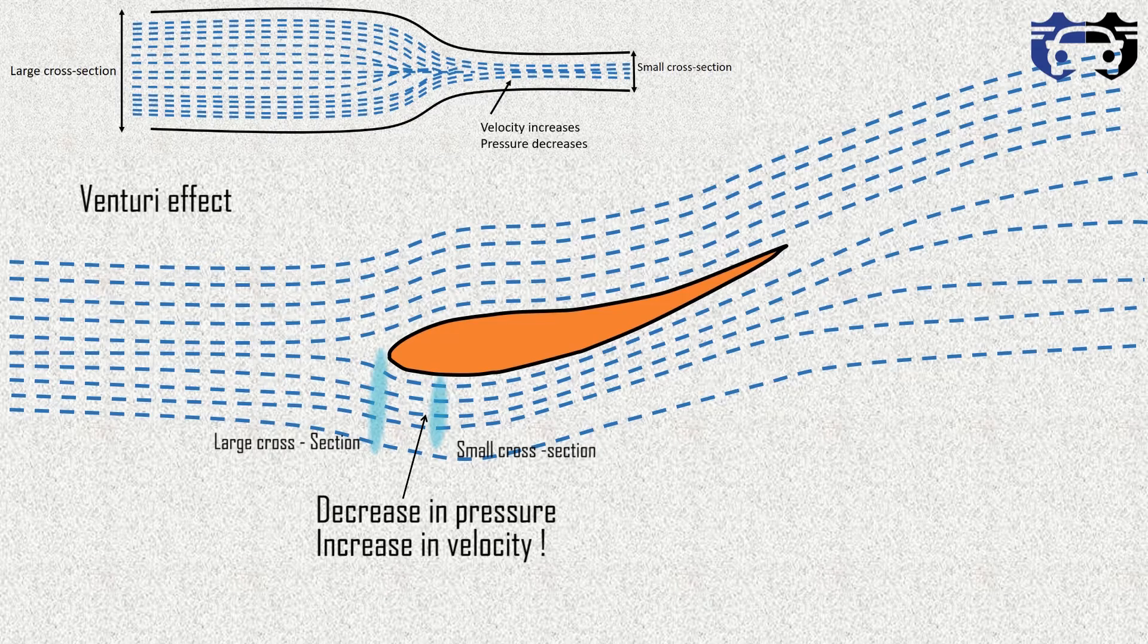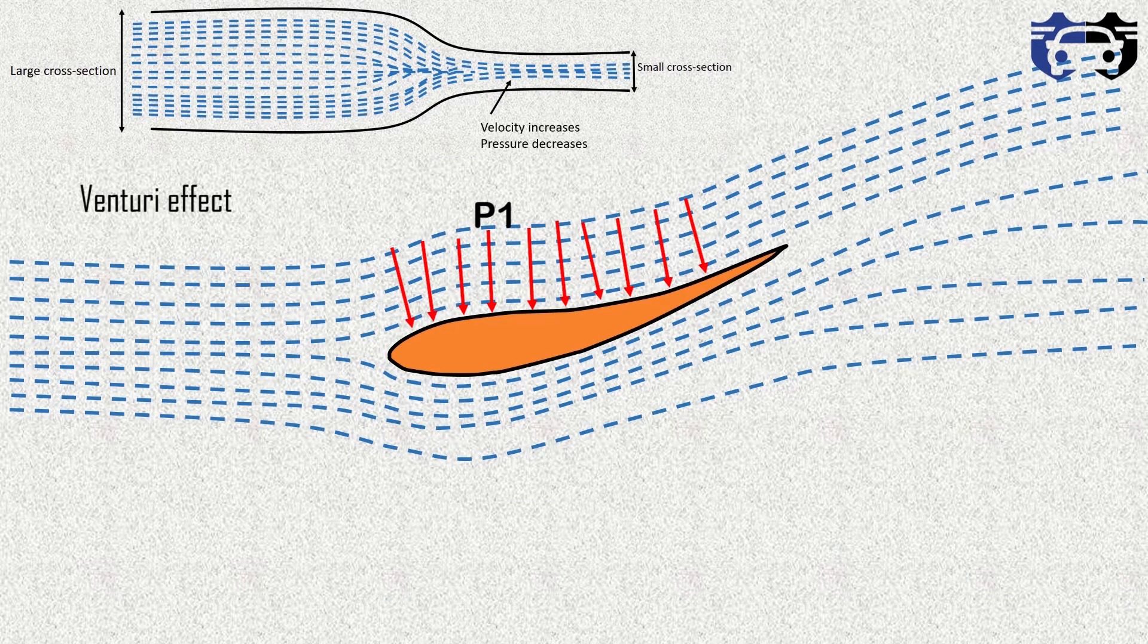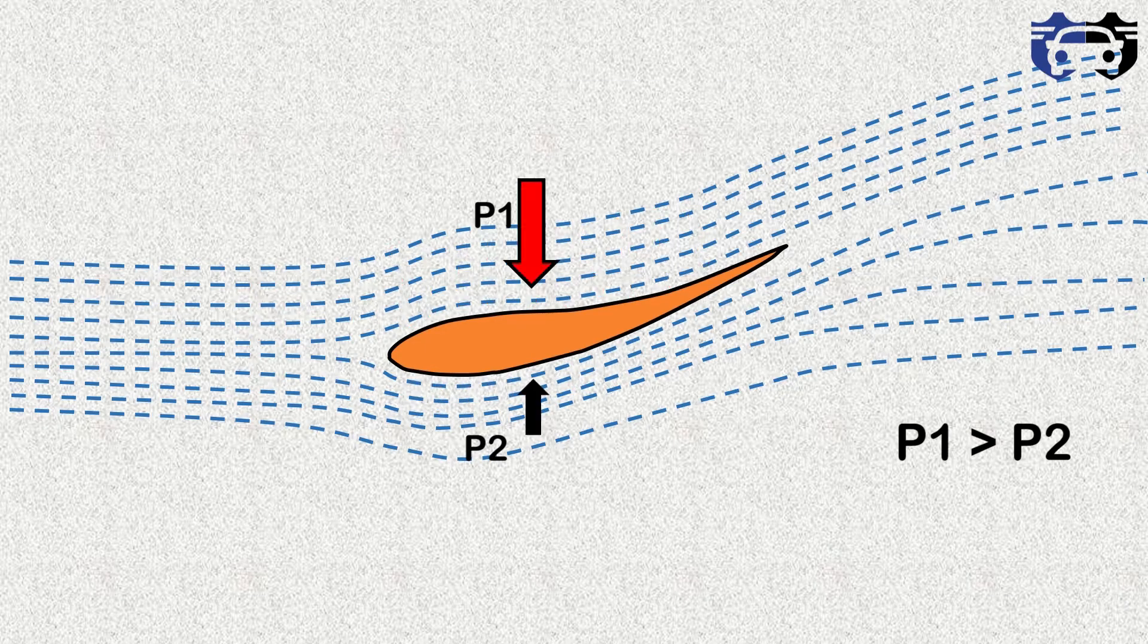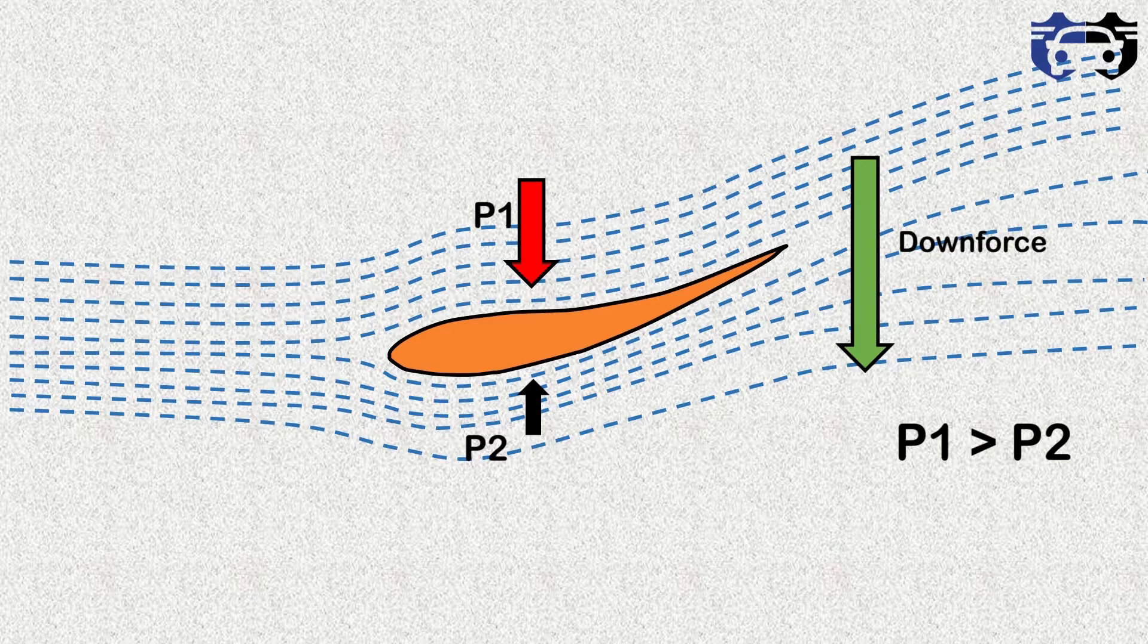At the top we are having the pressure P1. At bottom the pressure is P2. P1 is greater than P2, so effectively we are having the downforce. One thing to note here: why are the lines not going straight? Why are they getting attached to the airfoil?